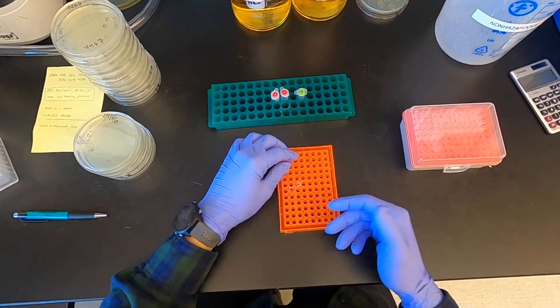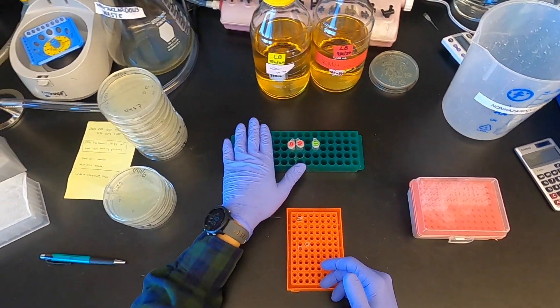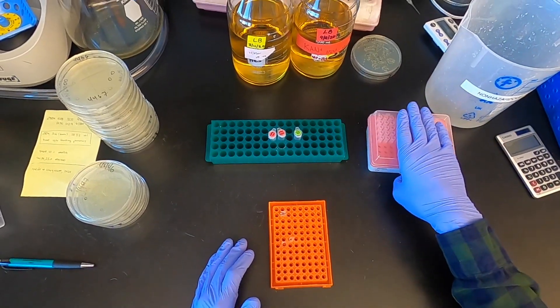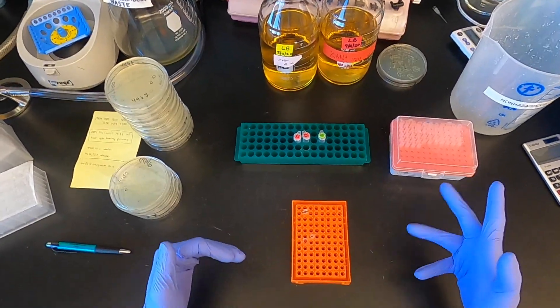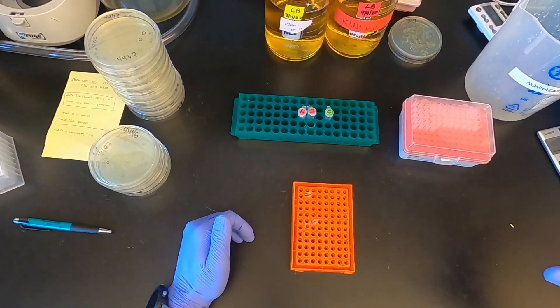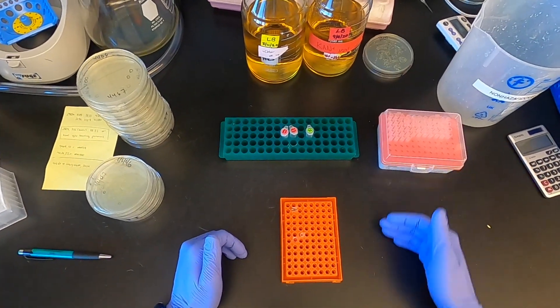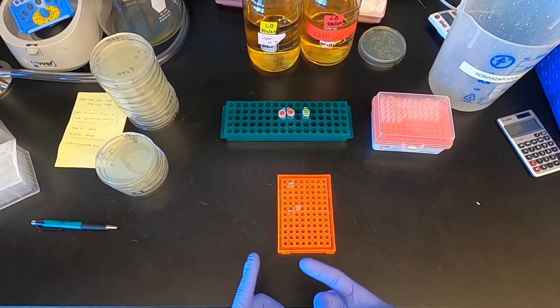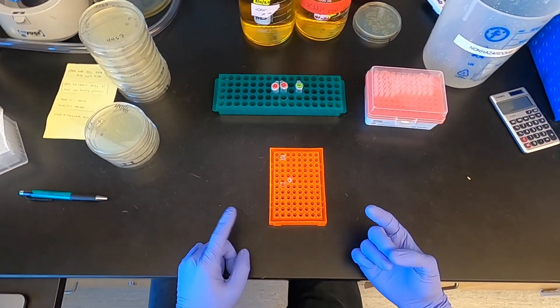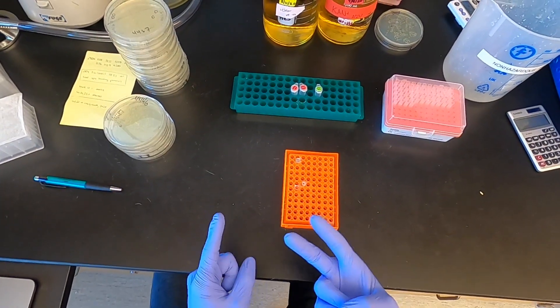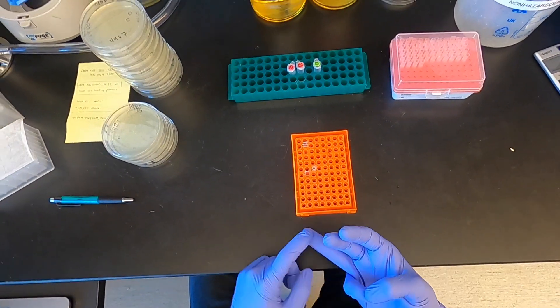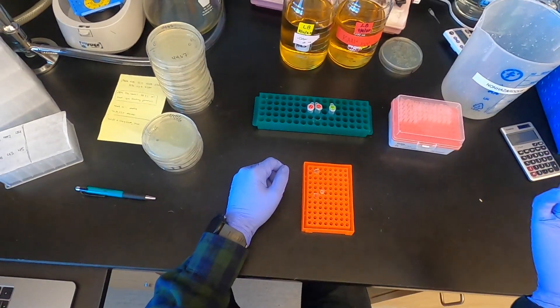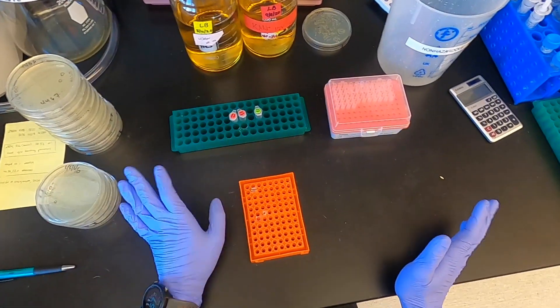Now I use a modified smaller volume Golden Gate protocol, so it's a 5 microliter total volume reaction mix. I'll link in the description what actually goes into this recipe. But essentially it's 0.25 microliters of each plasmid, 0.25 microliters of each enzyme, half a microliter of T4 DNA ligase buffer, and then fill to volume with water. Super easy protocol.